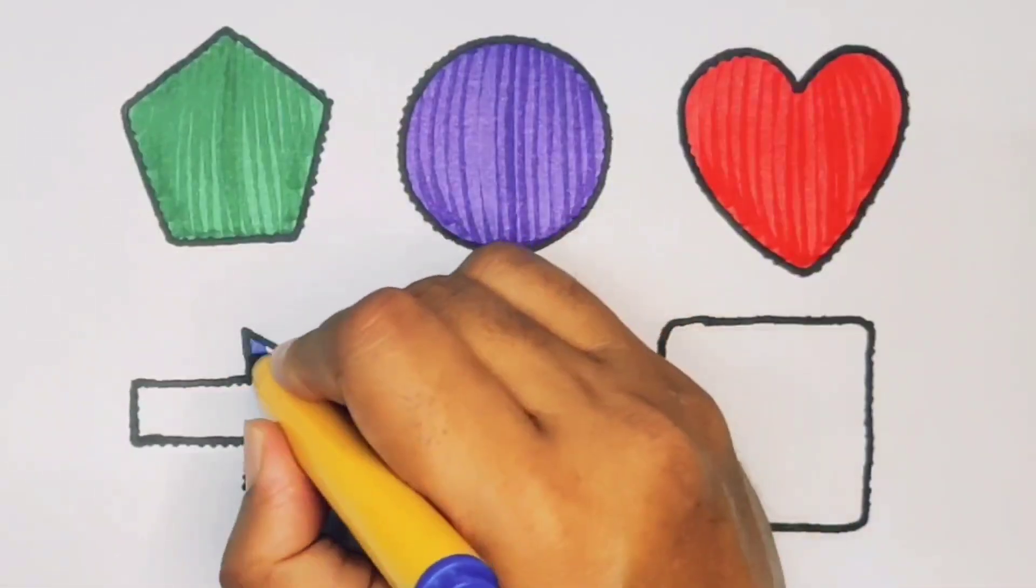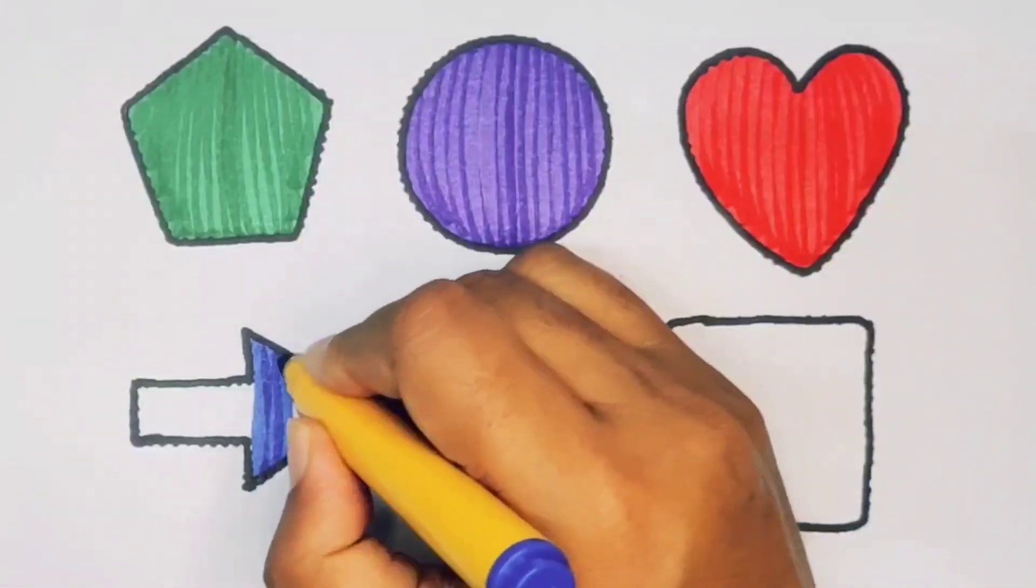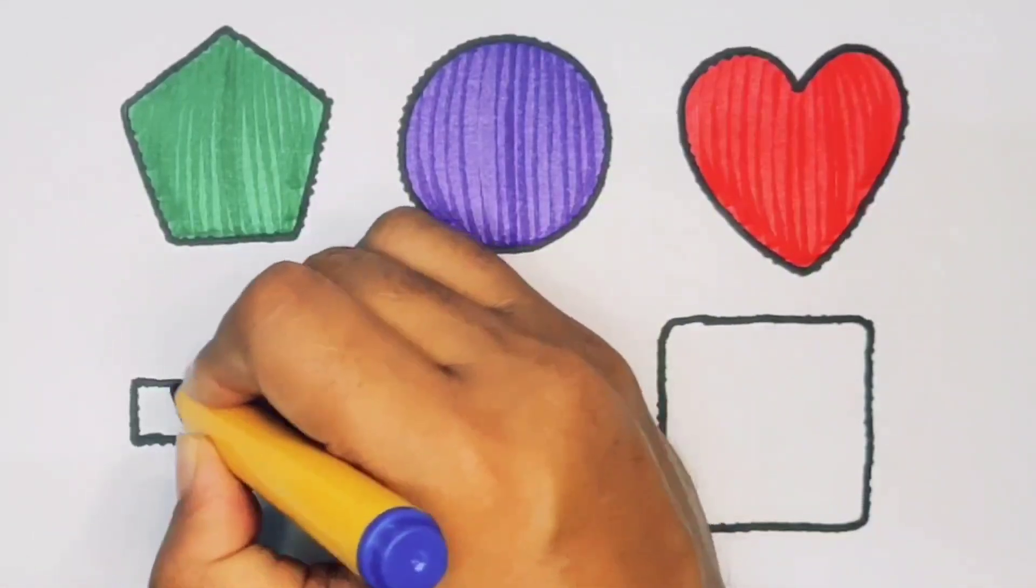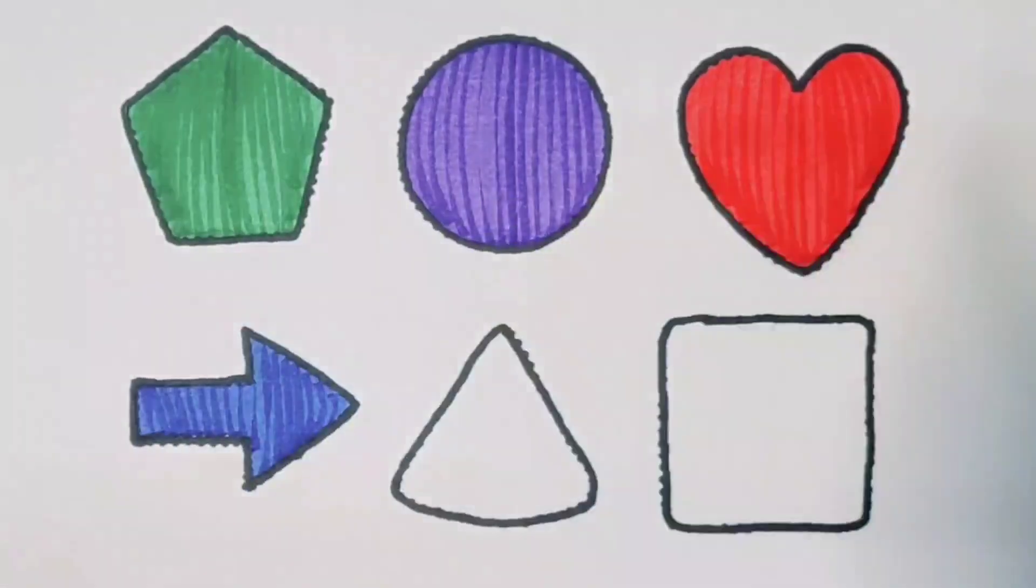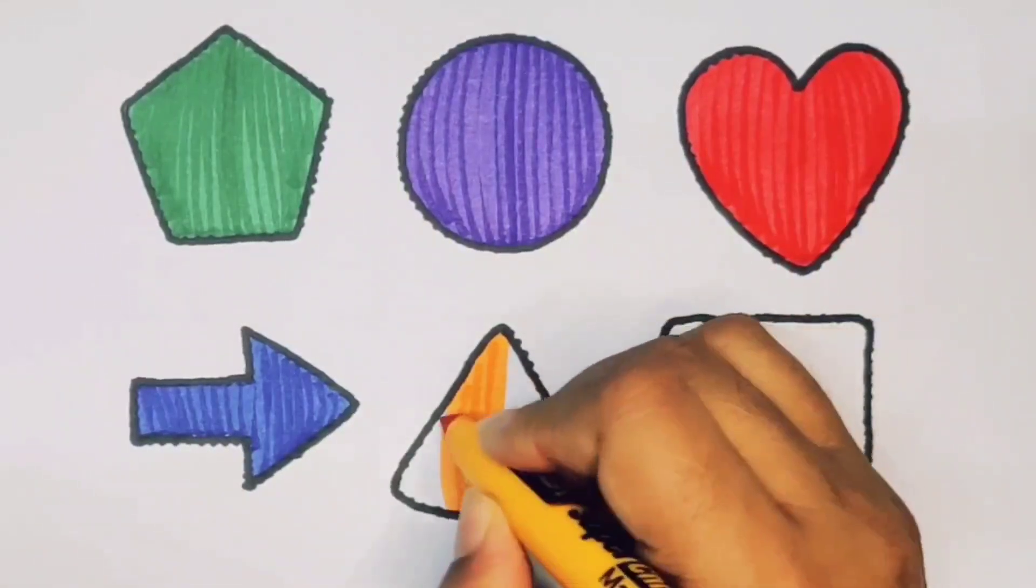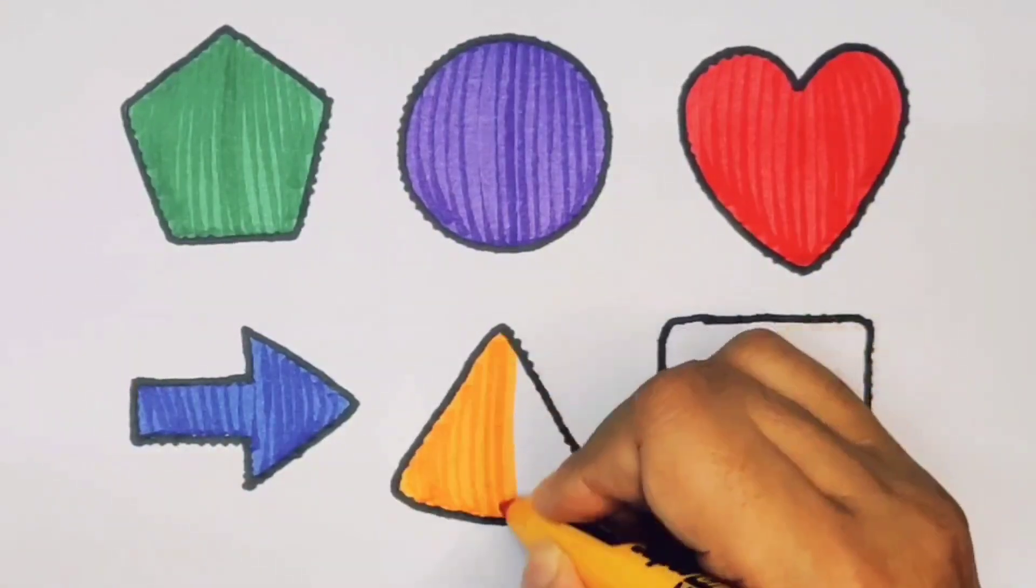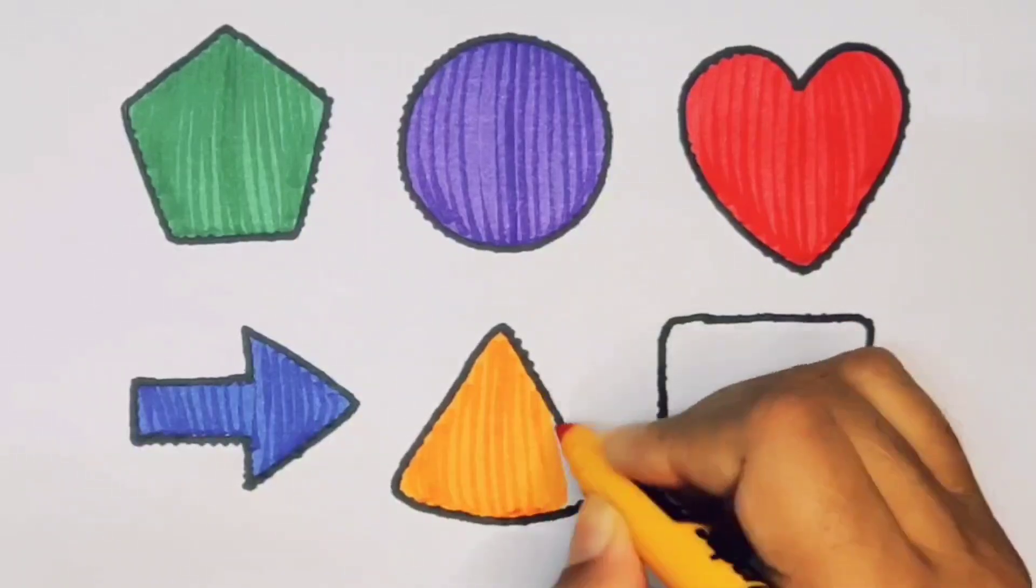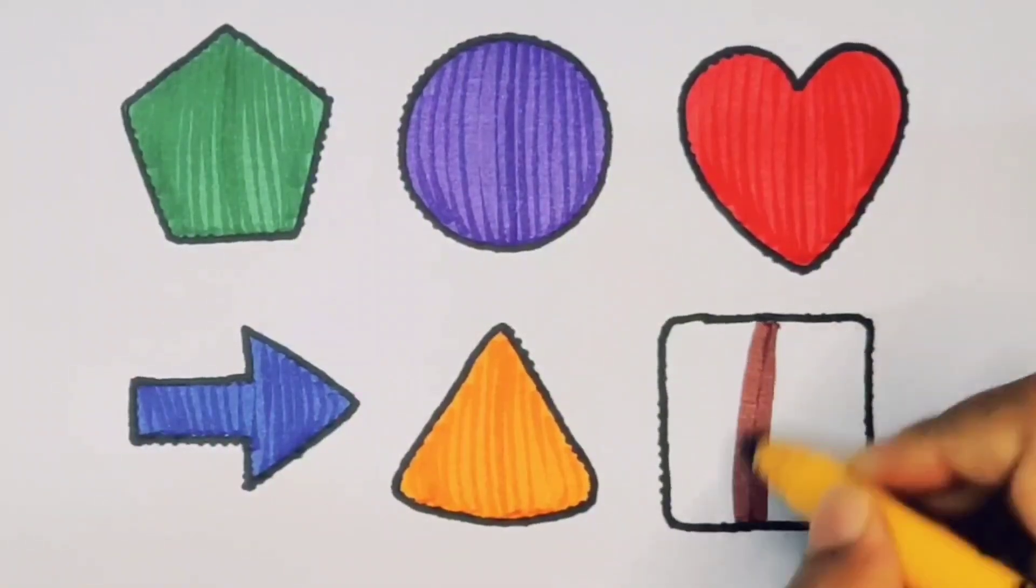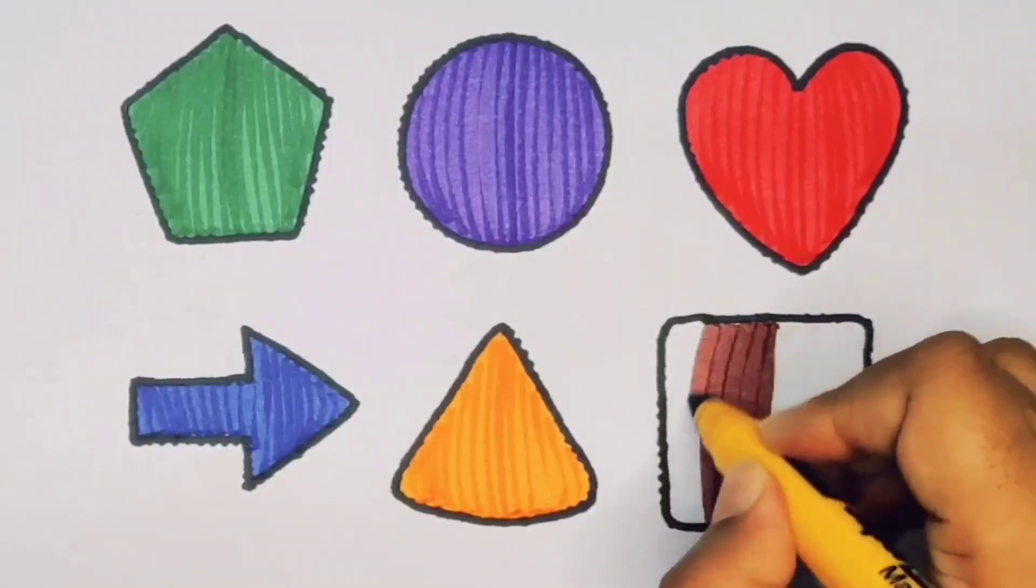Blue color arrow. Orange color triangle. Chocolate color square.